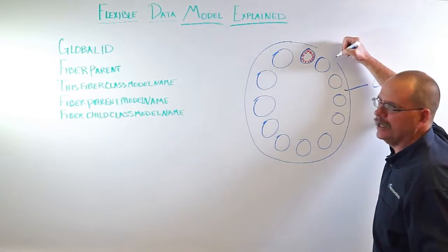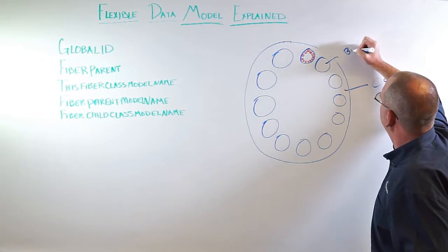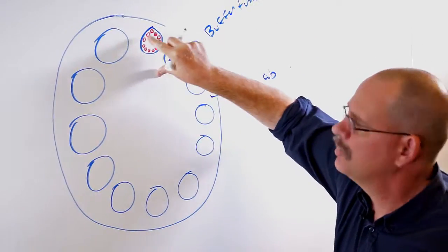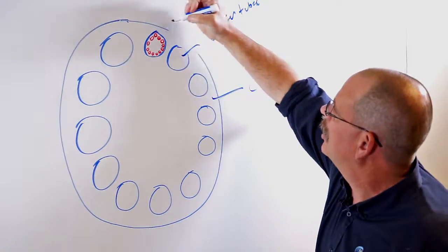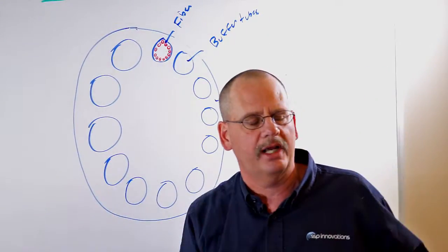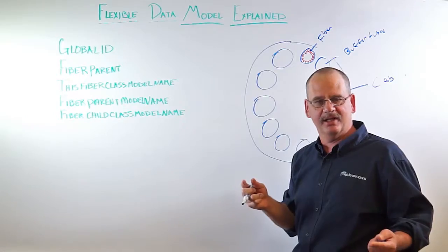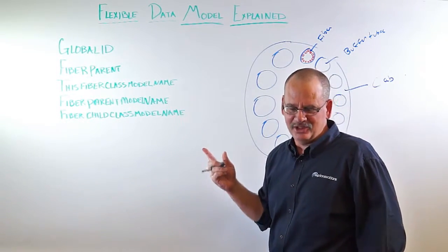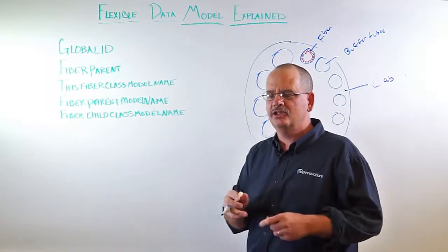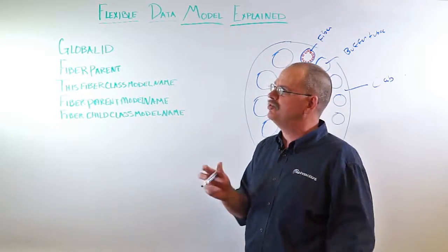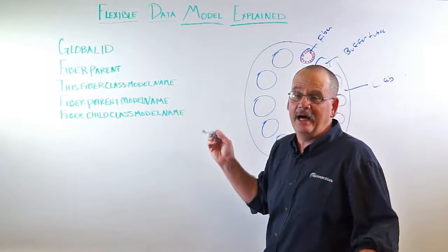The circles around, these are represented by the buffer tubes. And the red in here are actually the fibers, the individual fibers that are transmitting light, transmitting data. Now, the flexible data model is used by Fiber Manager to set up a parent-child relationship between various objects.